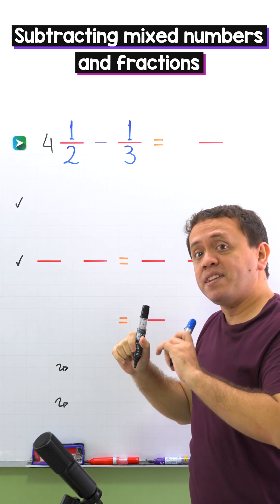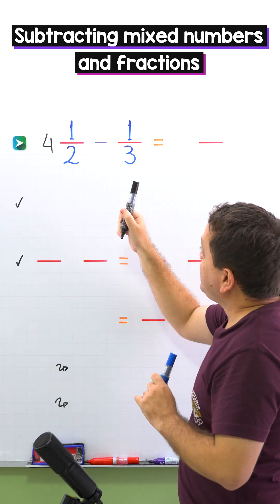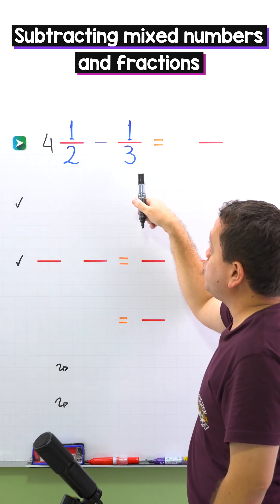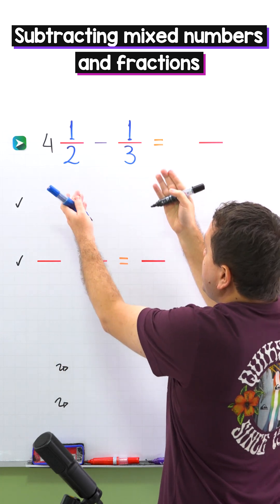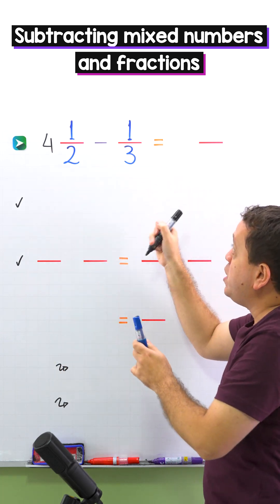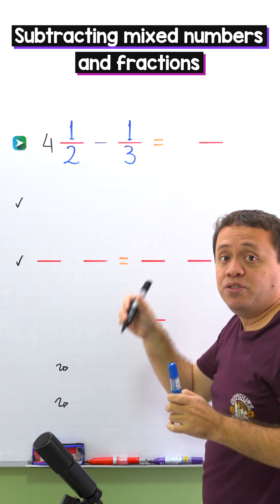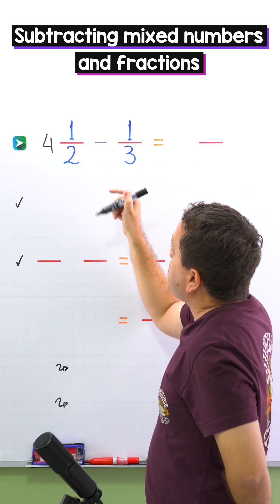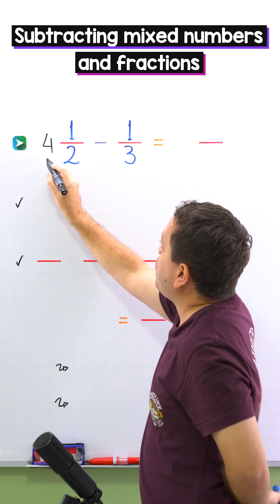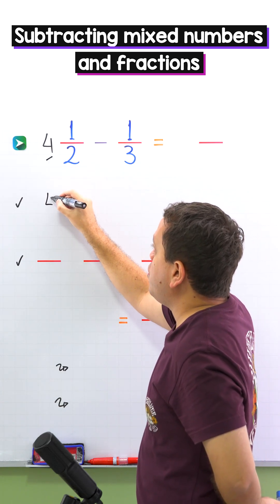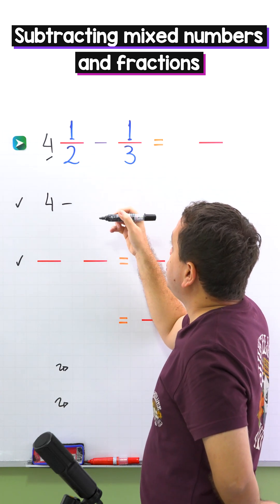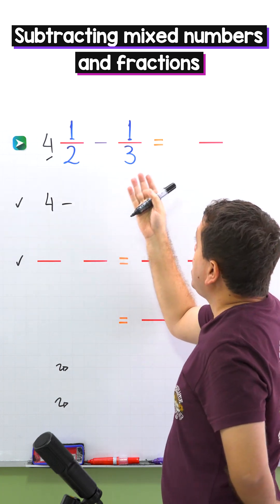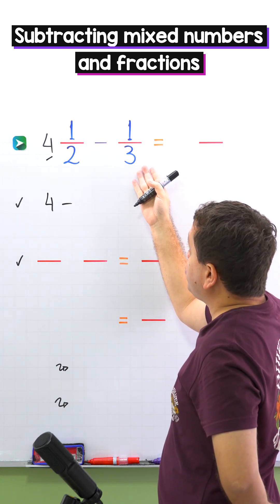Are you ready for the first example? In this example we need to subtract 4 and one half minus one third. We have a mixed number and a fraction. To find the difference we'll start by subtracting the whole numbers. In this example the whole number is 4, so we put 4 minus, and here we have no whole numbers — we only have the fraction one third.